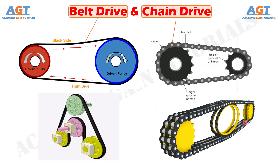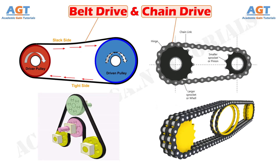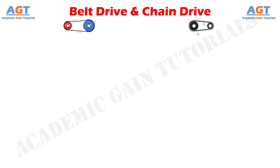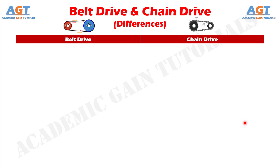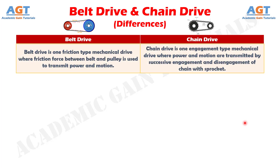Let's look into the basic differences between belt drive and chain drive in a tabular form. Difference number 1: Belt drive is one friction type mechanical drive where friction force between belt and pulley is used to transmit power and motion. Whereas, chain drive is one engagement type mechanical drive where power and motion are transmitted by successive engagement and disengagement of chain with sprocket.